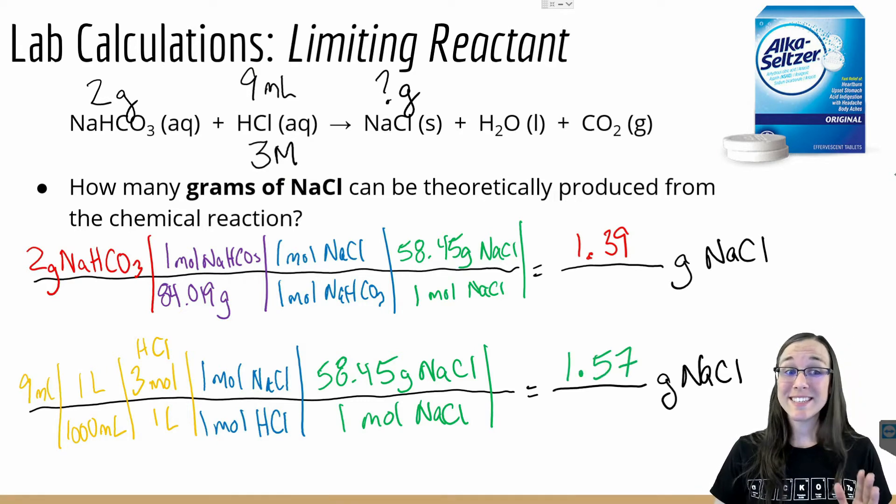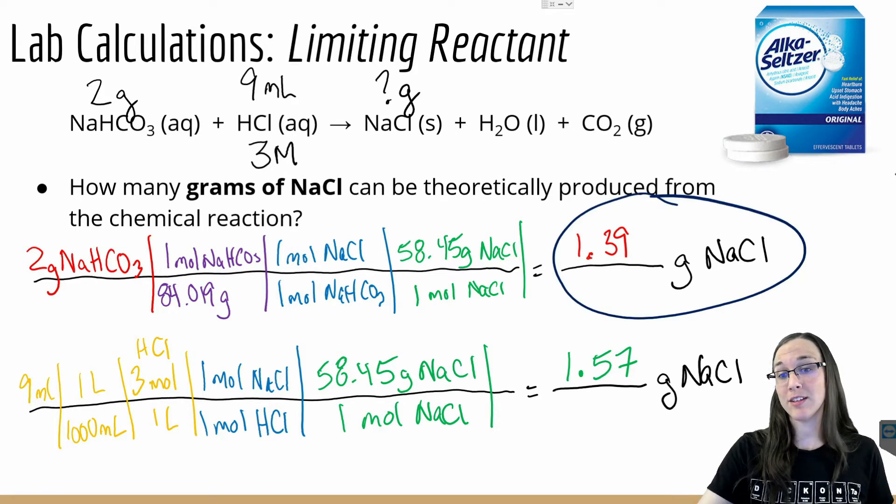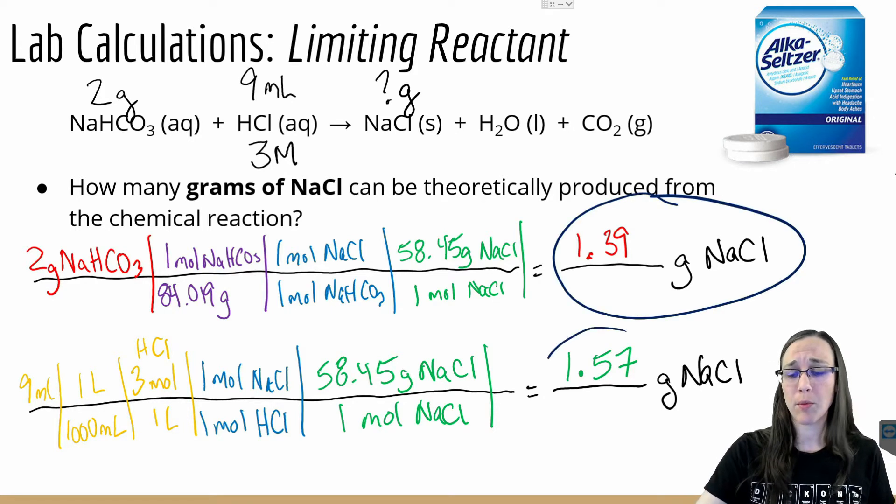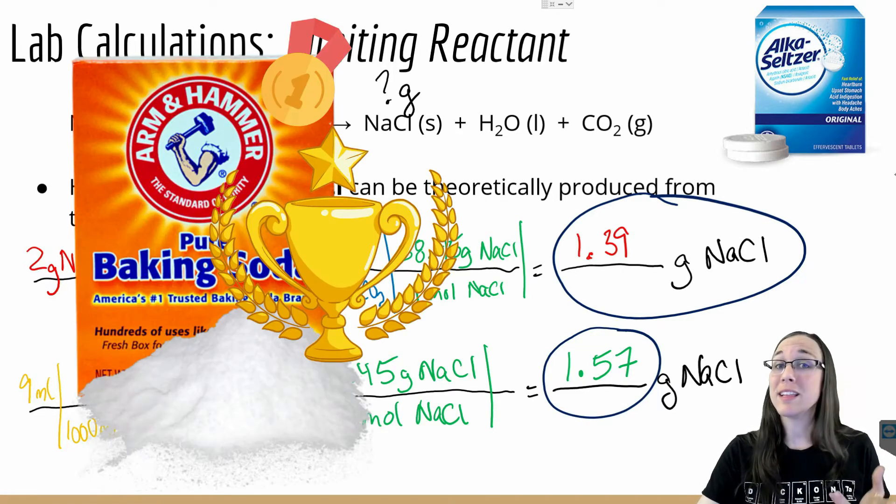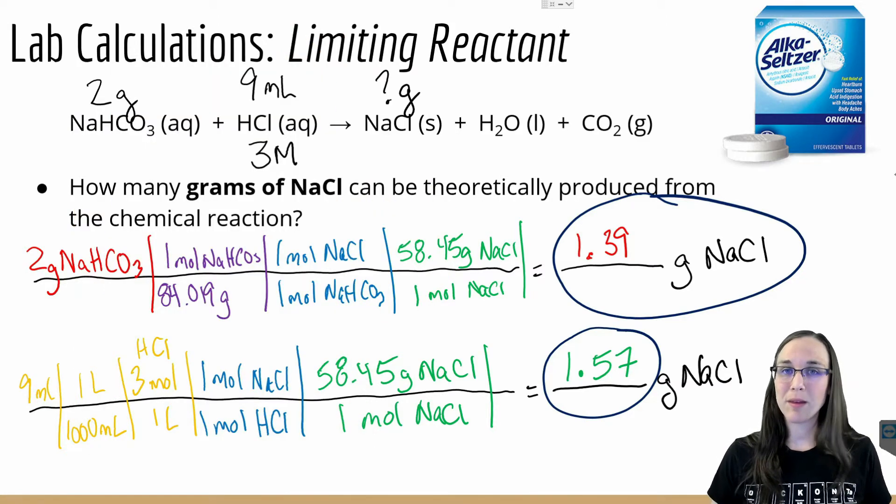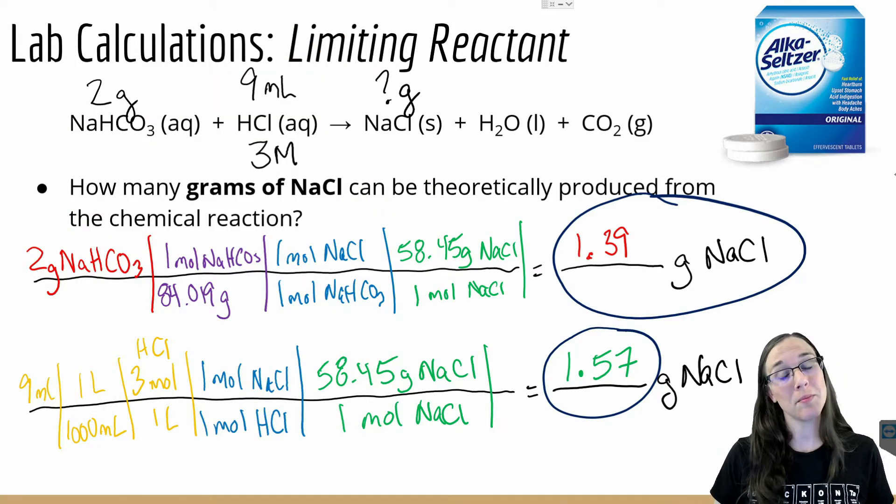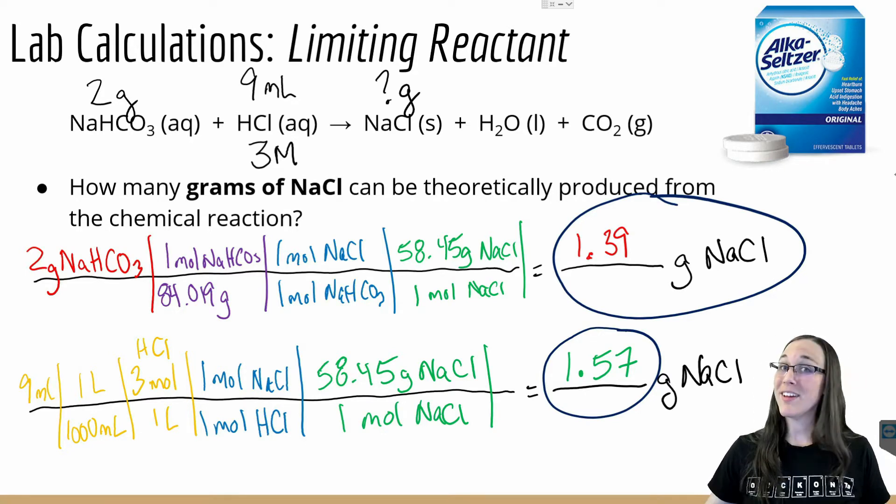But since the baking soda at 2 grams can only make 1.39 grams of salt, and that happens to be less than 1.57 grams created from the hydrochloric acid, then we know that the limiting reactant should be the baking soda. In other words, theoretically, we can produce a maximum amount of 1.39 grams of salt using 2 grams of baking soda. Now let's see the reaction.